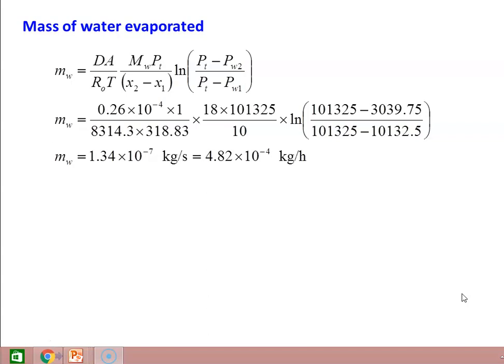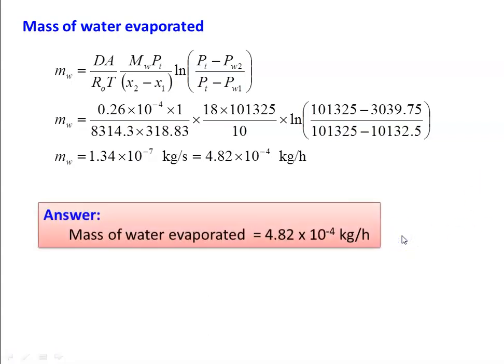Substituting all numerical values: D equal to 0.26 into 10 power minus 4, area equal to 1 meter square, R0 value, temperature is 318.83, molecular weight 18, pressure 101325 divided by distance 10, and substituting the partial pressures. Calculating, mass of water evaporated is 1.34 into 10 power minus 7 kilograms per second, which is equal to 4.82 into 10 power minus 4 kilograms per hour. The mass of water evaporated is 4.82 into 10 power minus 4 kilograms per hour.